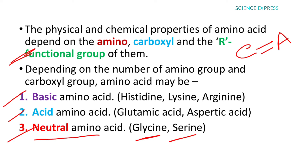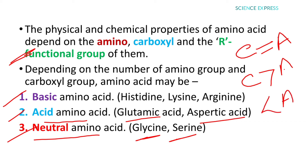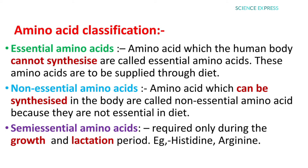If the number of carboxyl groups is greater than the amino groups, the amino acid is acidic in nature — examples are glutamic acid and aspartic acid. If the number of amino groups is greater than carboxyl groups, the amino acid is basic in nature — examples of basic amino acids are histidine, lysine, and arginine.